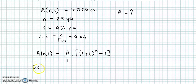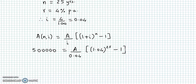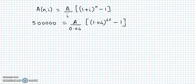Accumulated value is 5 lakhs: 500000. I have 0.04. This total will be 1 plus i. 1 plus i will be 1.04 raised to n. N is 25 minus 1. Now 5 lakhs multiplied by 0.04 gives us 20,000.